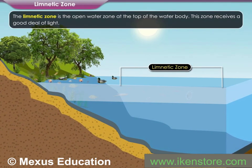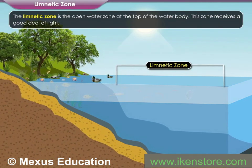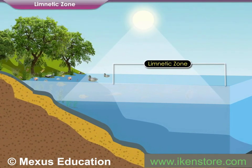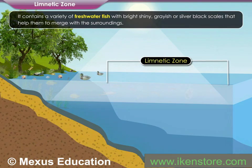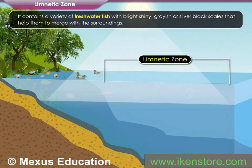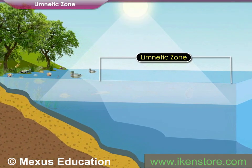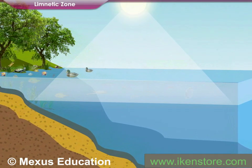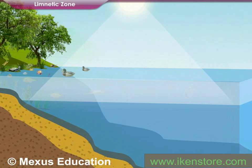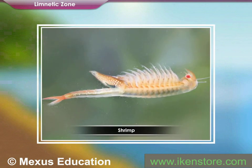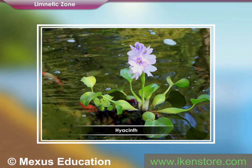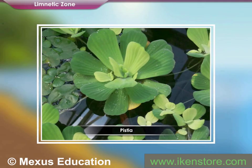The limnetic zone is the open water zone at the top of the water body. This zone receives a good deal of light. It contains a variety of freshwater fish with bright shiny, grayish or silver-black scales that help them merge with the surroundings. Transparent or whitish-bodied crustaceans like Daphnia, Cyclops, and small shrimps are also found. There are different types of floating plants like Water Hyacinth, Wolffia, and Pistia along with a variety of algae.